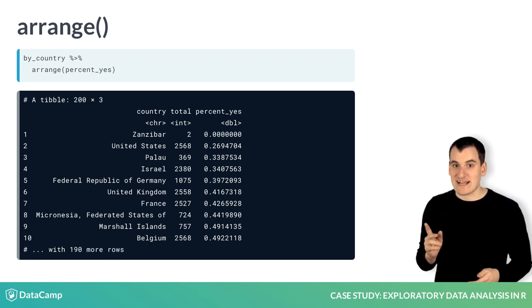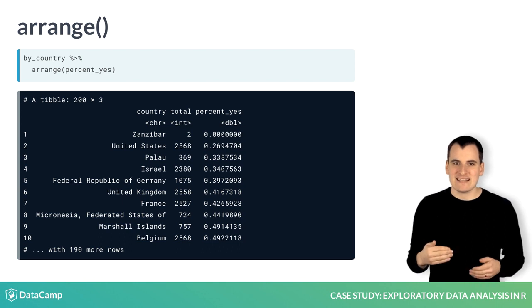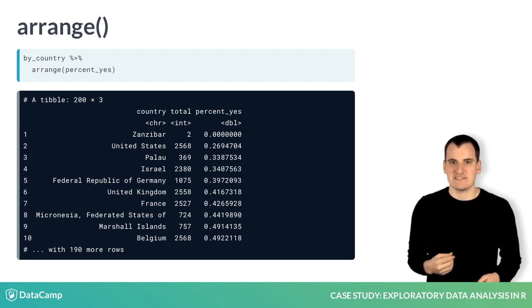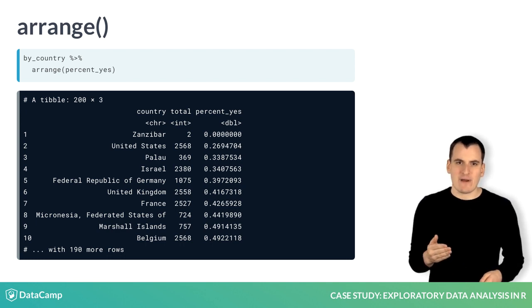But we might also notice that Zanzibar only had two votes in our entire dataset, which means that 0% is basically meaningless. This is a very common way that summarized data can trip you up, and why you have to be careful about interpreting your results too quickly.